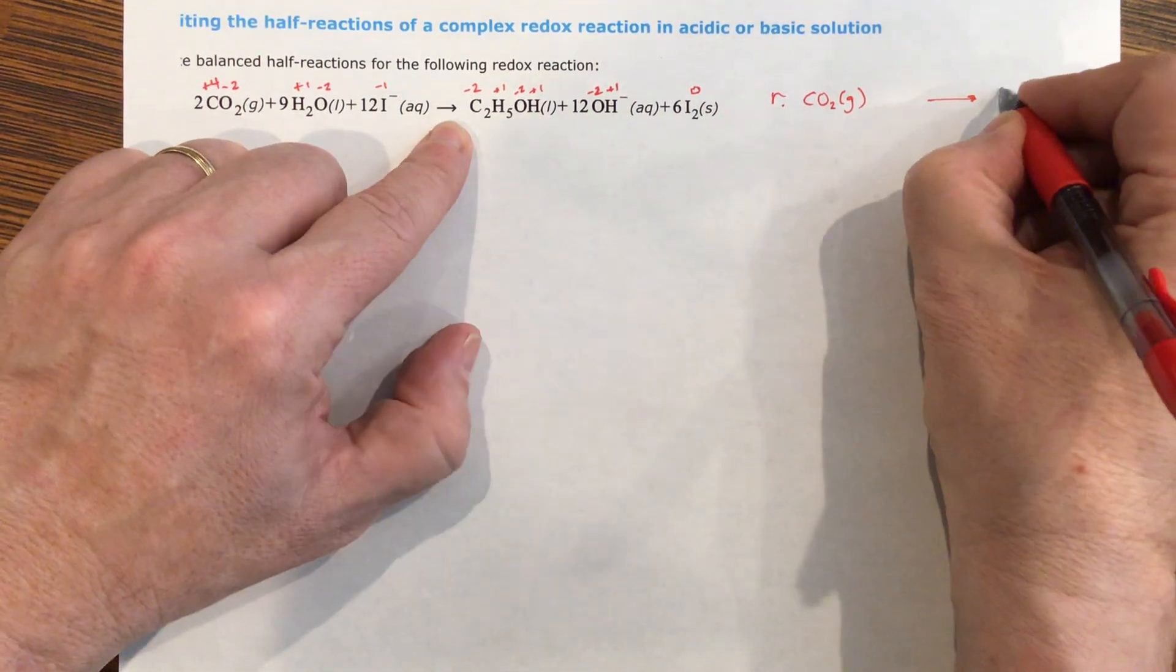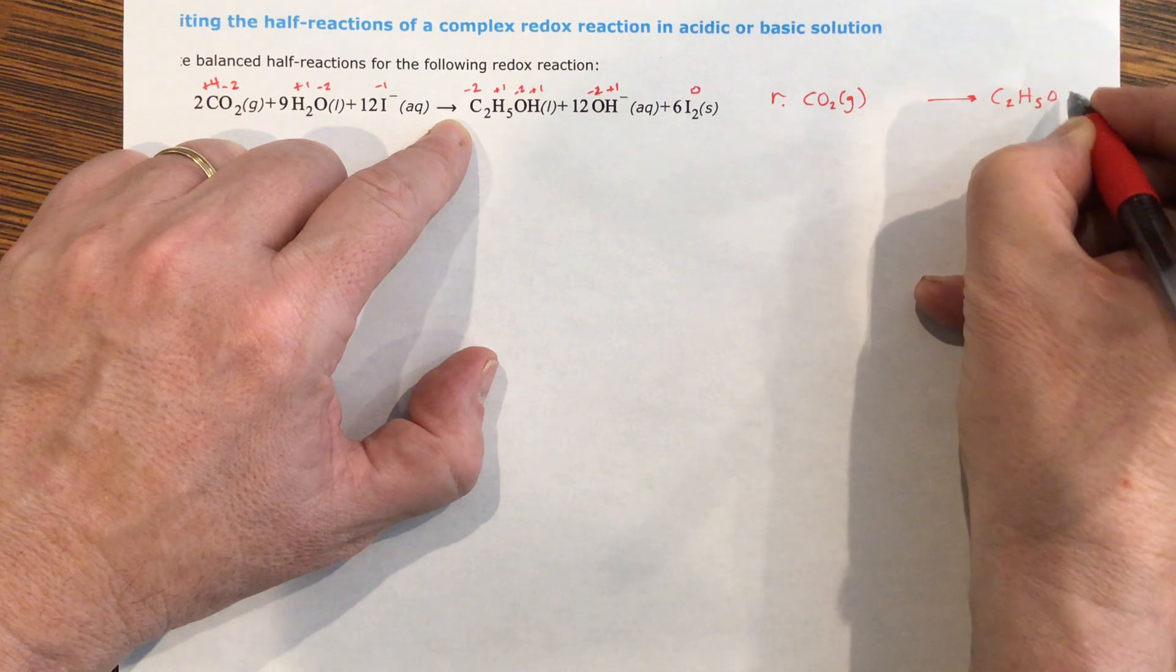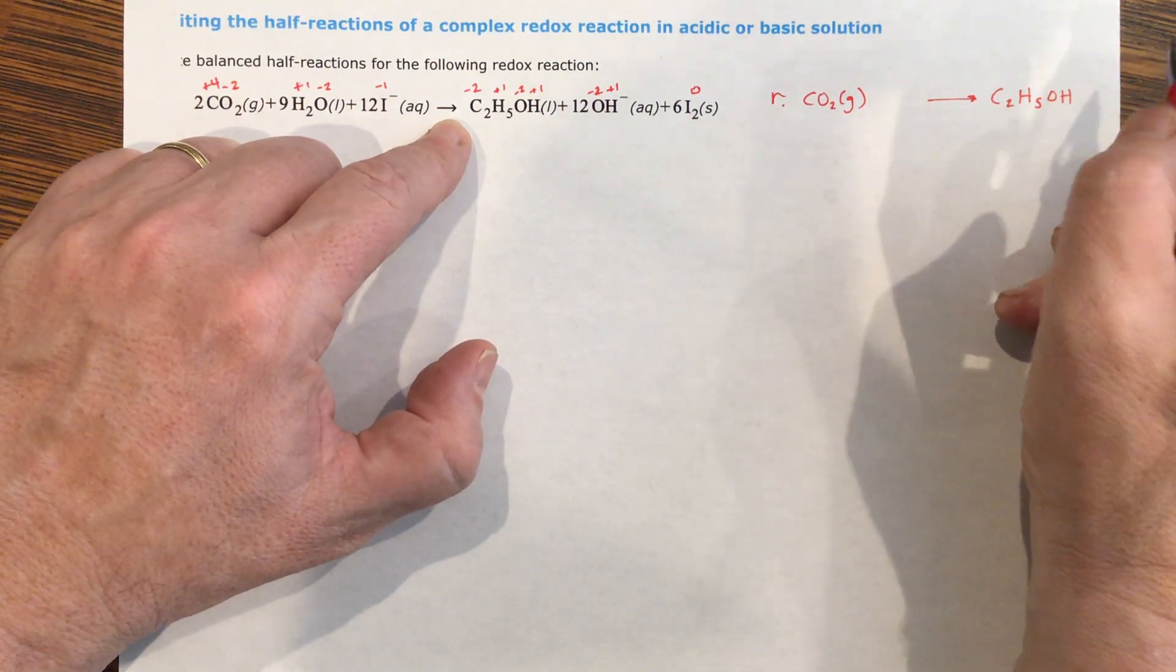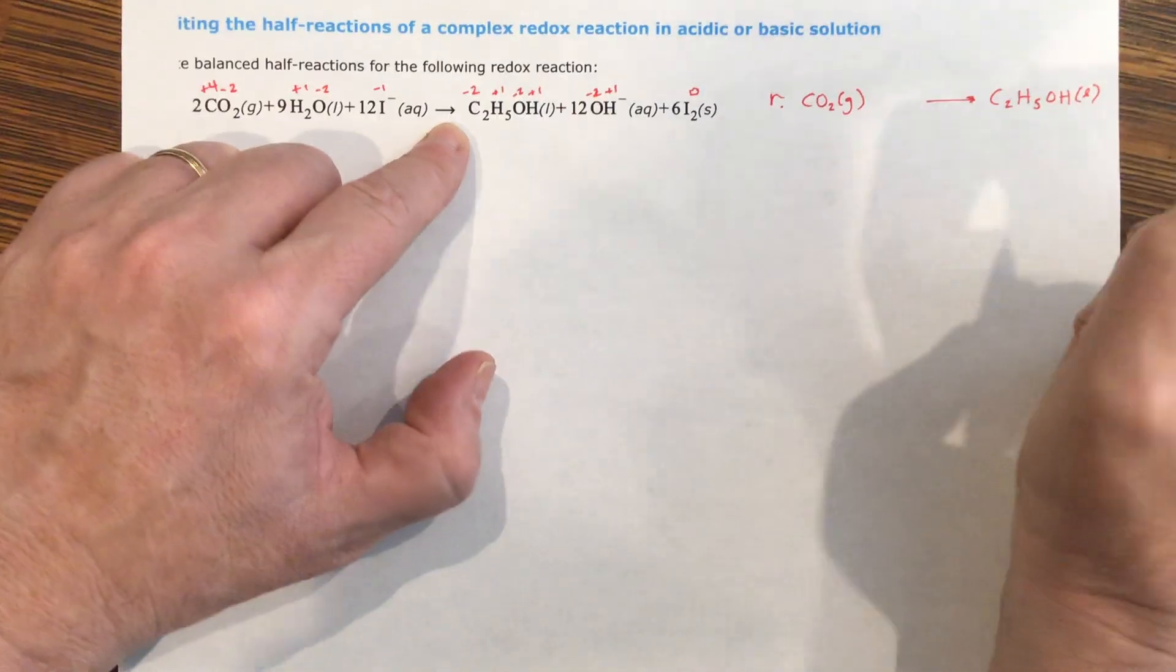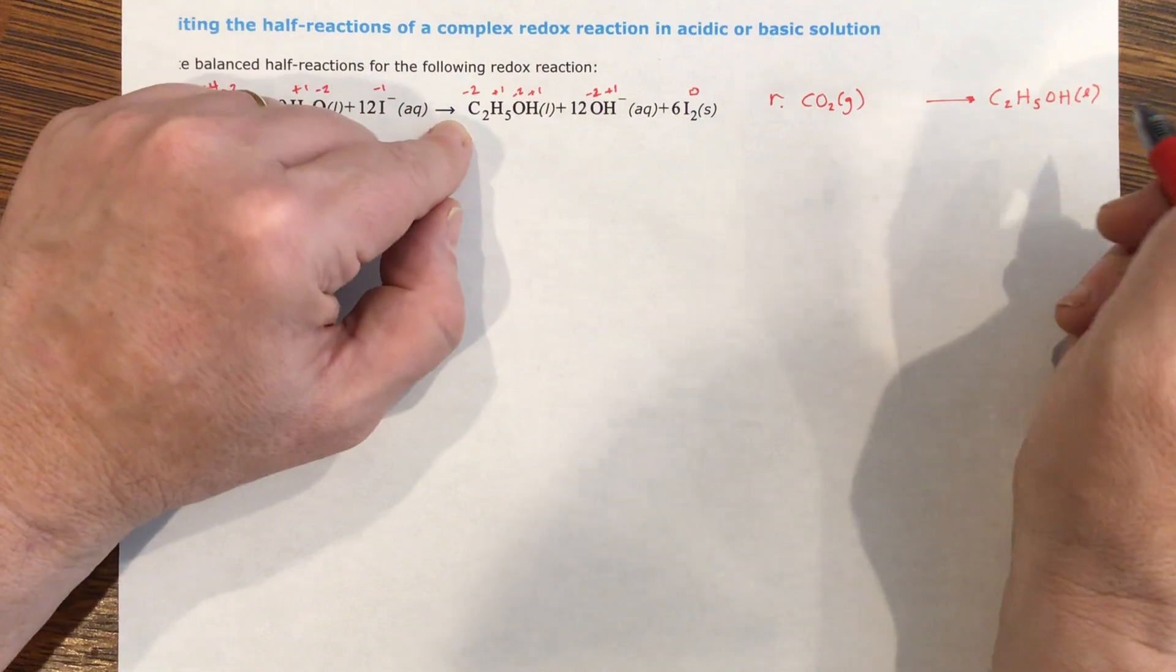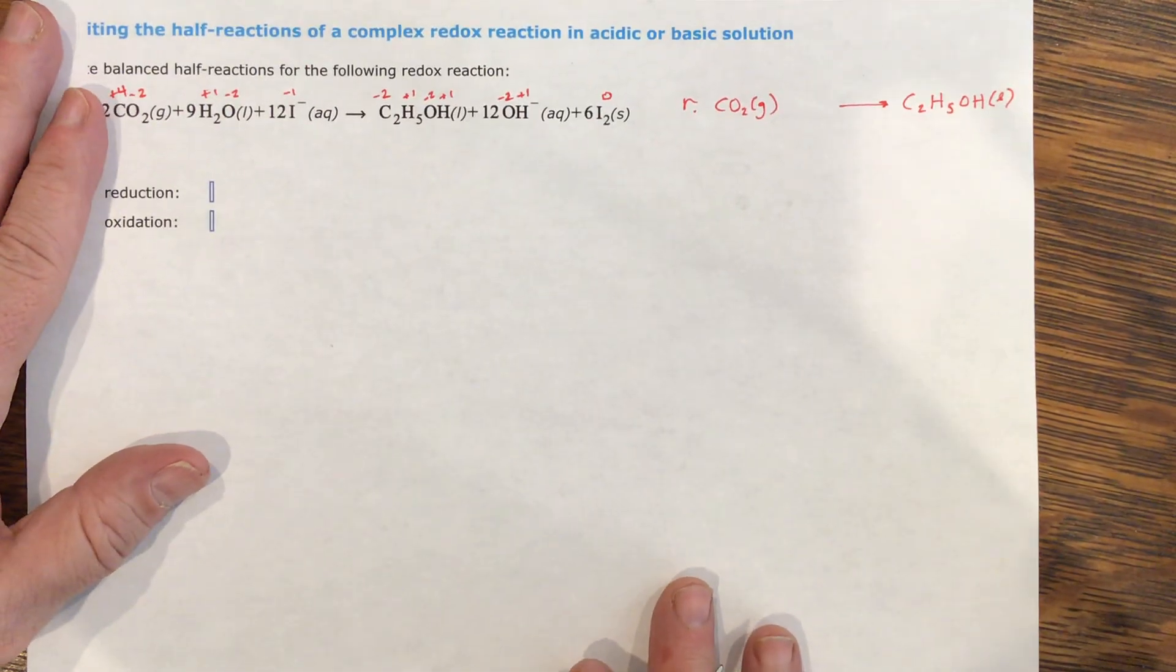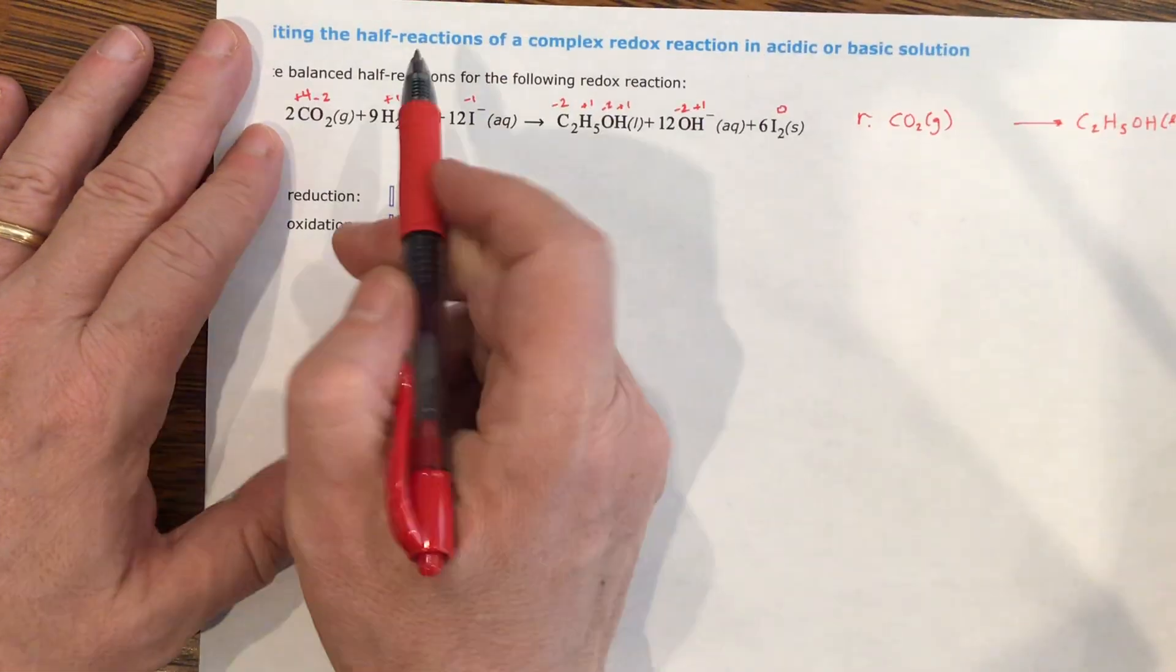So this is the part of this that went down is the carbon dioxide, CO2 gas. And it went to what? It went to this carbon compound, it's ethanol, which is a liquid. Now we have to take care of the electrons. How many electrons went away?